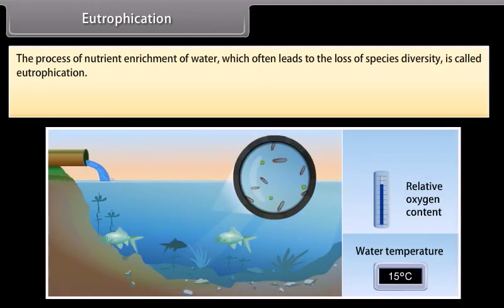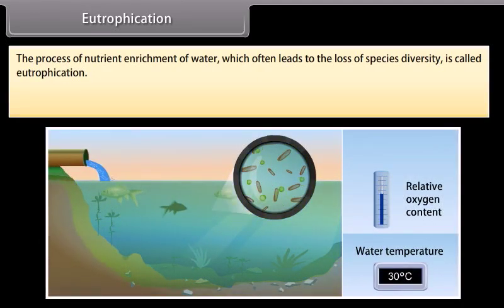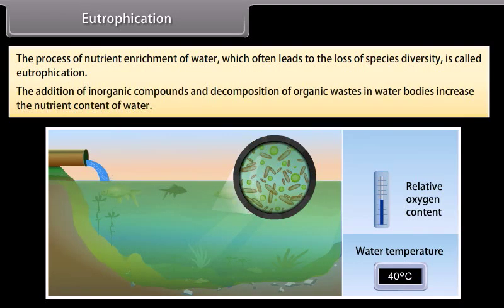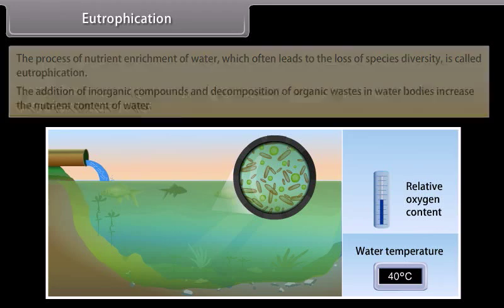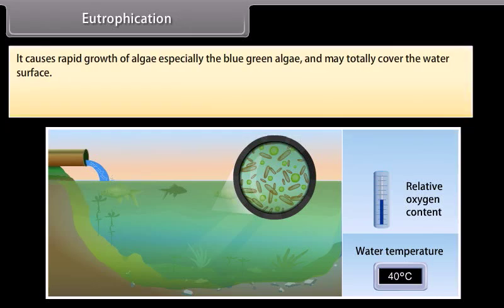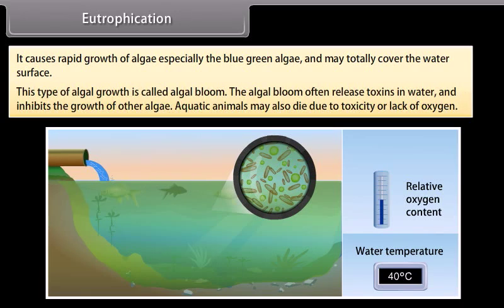Eutrophication is the process of nutrient enrichment of water which often leads to the loss of species diversity. The addition of inorganic compounds and decomposition of organic wastes in water bodies increase the nutrient content of water. This causes rapid growth of algae, especially blue-green algae, which may totally cover the water surface — a type of algal growth called an algal bloom. Algal blooms often release toxins in water and inhibit the growth of other algae, and aquatic animals may die due to toxicity or lack of oxygen.